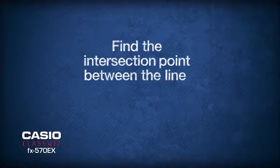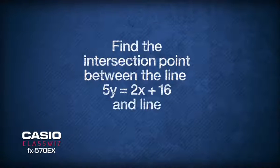And so the question goes, find the intersection point between the line 5y equals 2x plus 16 and line y equals negative 8 plus 6x.